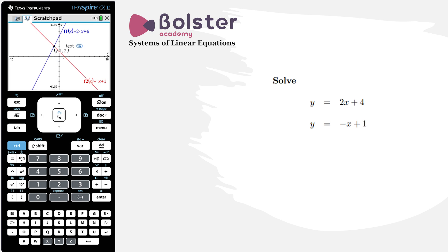There, if I just move my point across to see it more clearly, we can see the solution is at minus one, two. So that's telling me that x equals minus one and y equals two is the solution to this system of equations.